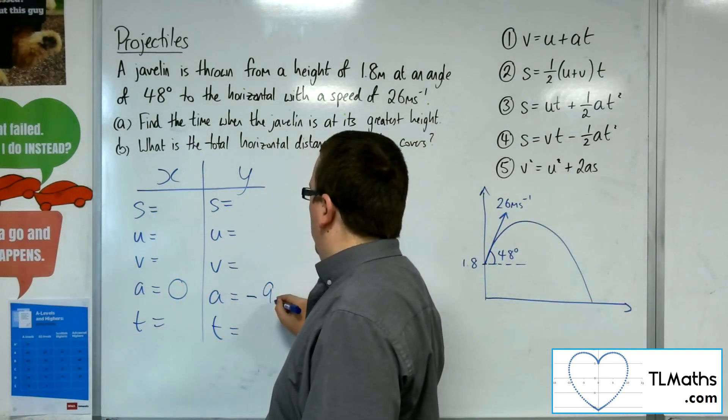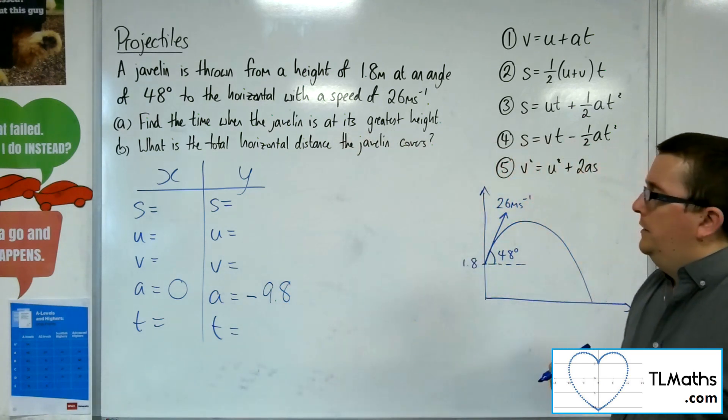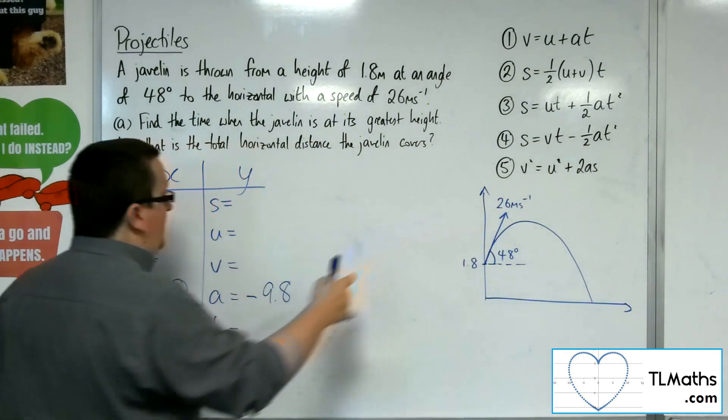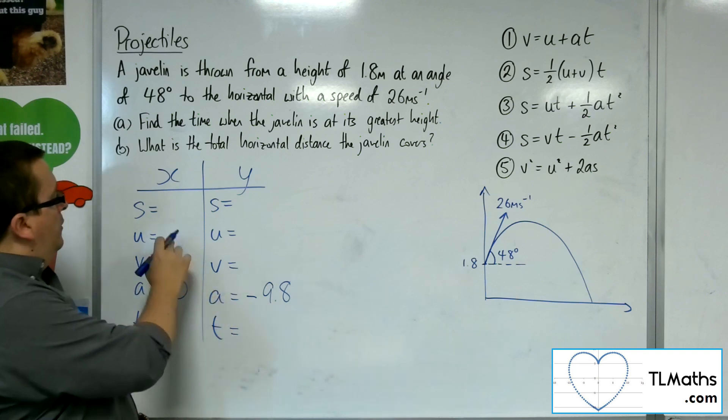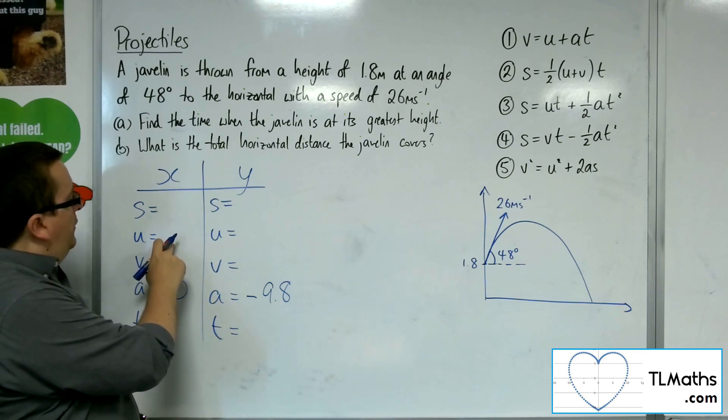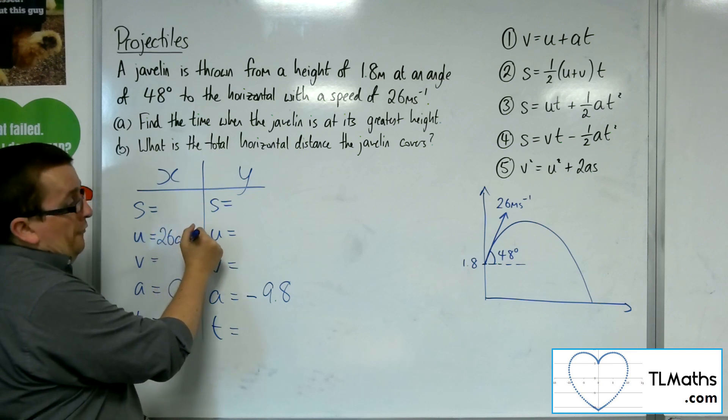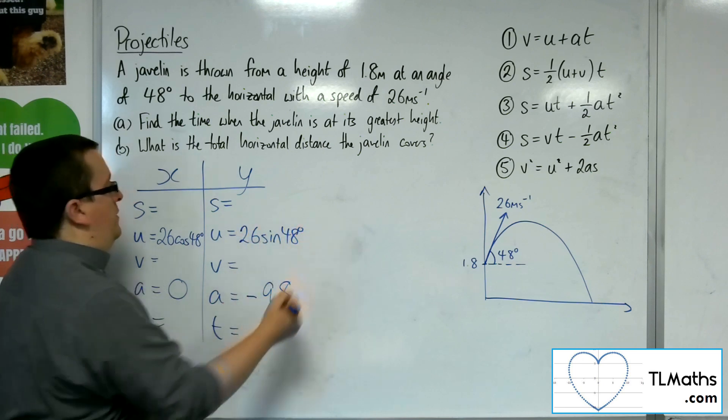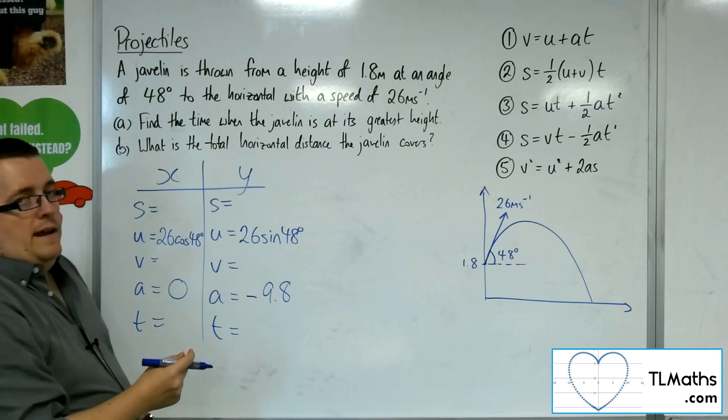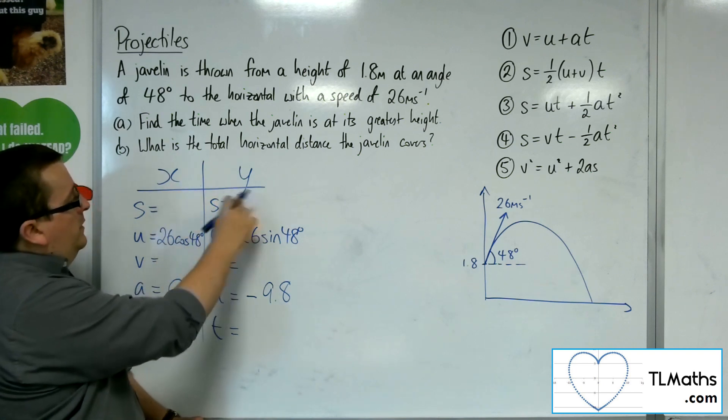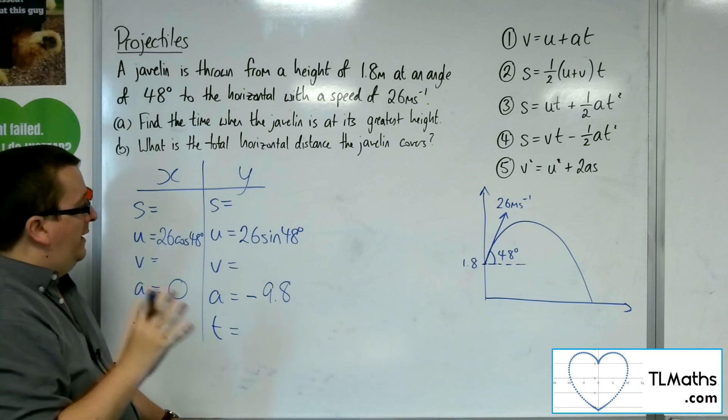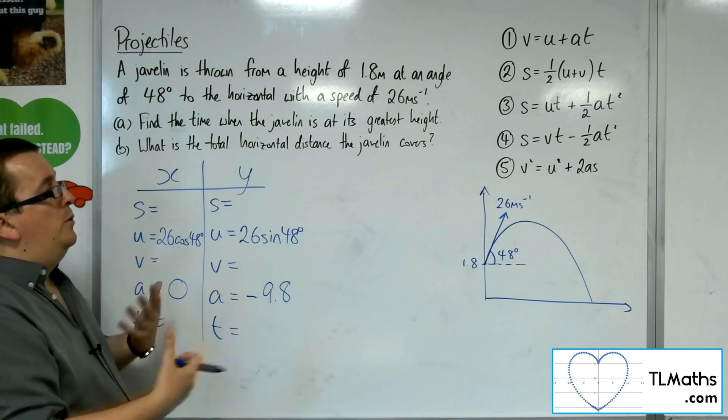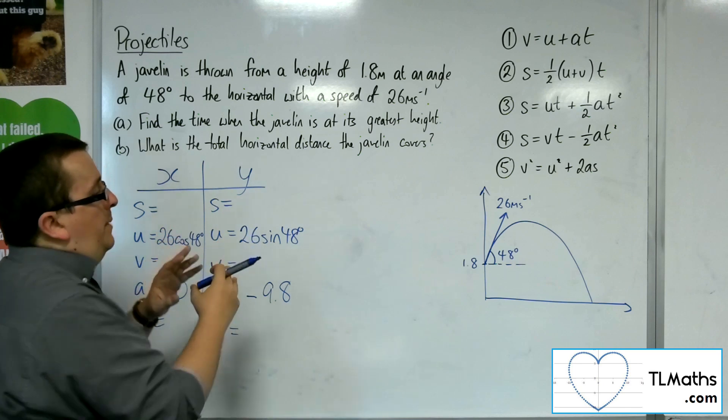Now, the initial velocity we know is 26, well, the initial speed is 26. So the horizontal component for the velocity will be 26 cosine 48, and the vertical component will be 26 sine 48. Now, I could write in the initial displacement here, but really what I want to do is I want to keep that in mind as I build in the equations, rather than putting it in here.